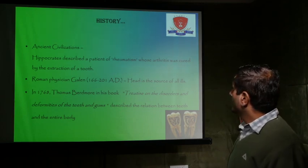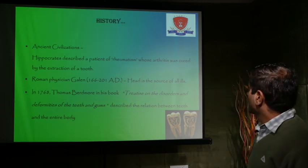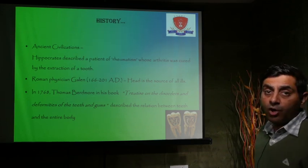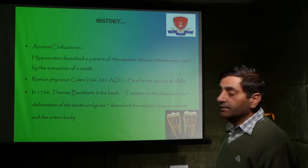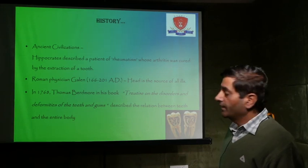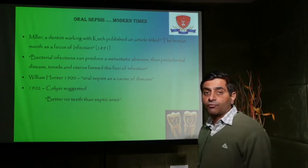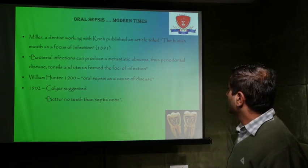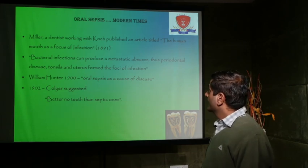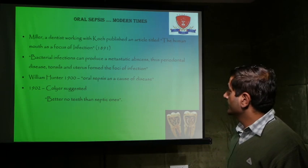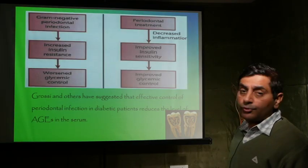Going back to history: in ancient civilization, Hippocrates described a patient of rheumatism whose arthritis was cured by extraction of a tooth. A Roman physician in 166–201 AD said the head is the source of all ills. In 1768, Thomas Birdmore in his book 'Treatise on the Disorders and Deformities of the Teeth and Gums' described the relation between teeth and the entire body. In modern times, Miller, a dentist working with Koch, published an article titled 'The Human Mouth as a Focus of Infection,' stating bacterial infection can produce a metastatic abscess, and thus periodontal disease, tonsils, and uterus form the foci of infection. In 1900, William Hunter described oral sepsis as a cause of disease.